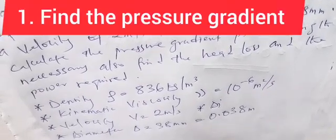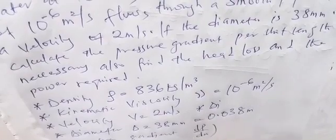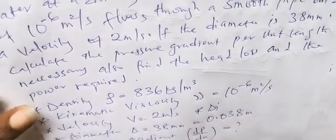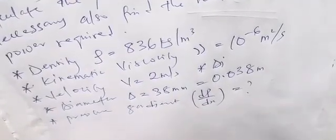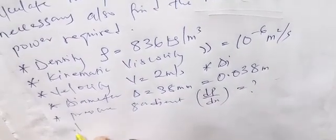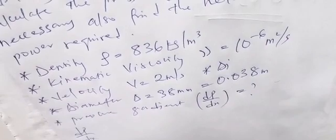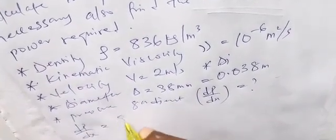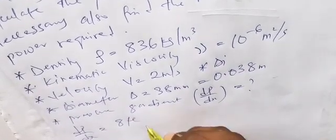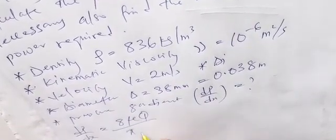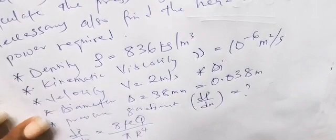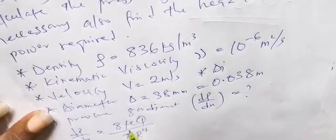The first question asks for the pressure gradient dp/dx. To find this, we use the Hagen-Poiseuille equation. The pressure gradient from Hagen-Poiseuille is equal to 8 times the coefficient of dynamic viscosity times discharge, all over pi times r to the power of 4. Since we have kinematic viscosity, we need to convert it to dynamic viscosity.